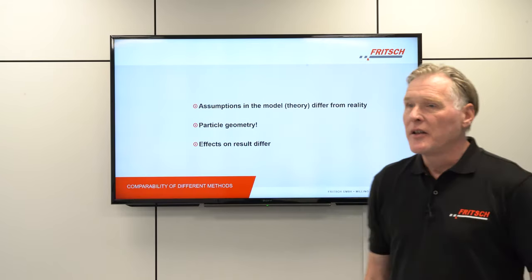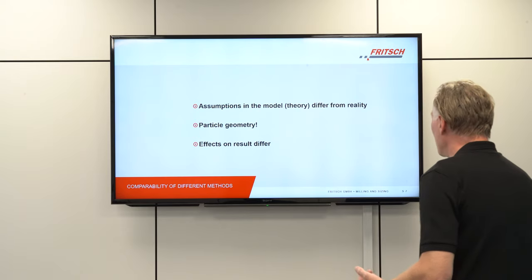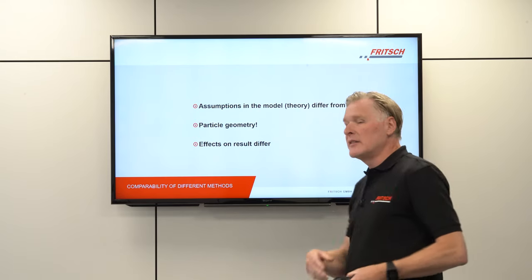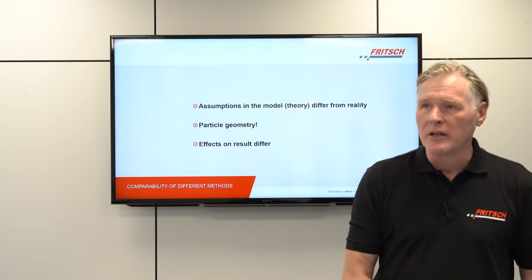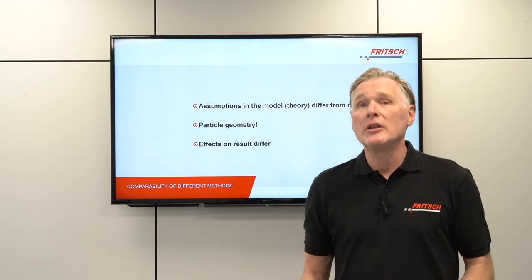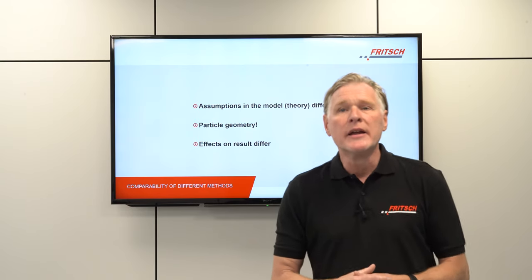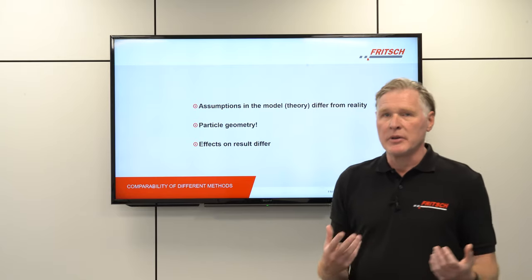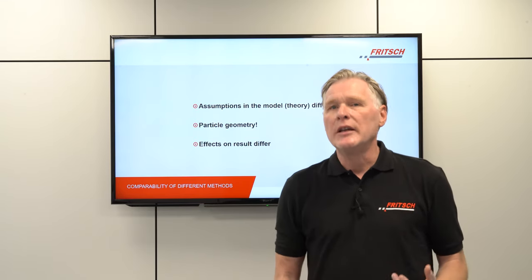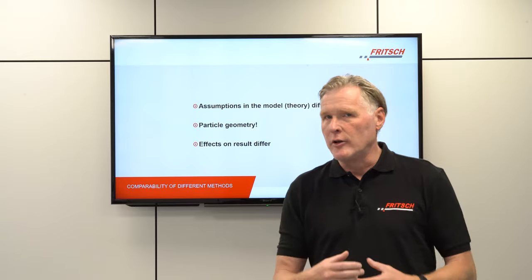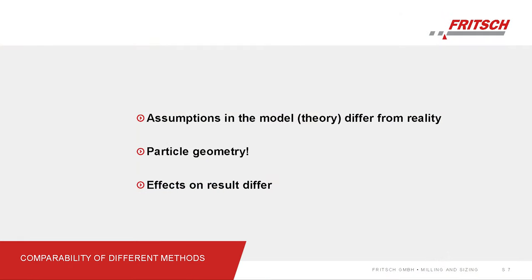The simple reason for this is that all those theories use models and assumptions that typically do not fit reality, so you have some deviations between the model and the real measurement situation. One important factor here is particle shape. Whether you have a spherical particle or a totally irregular shaped particle will strongly affect sedimentation, the scattering of light, or any other physical property you may observe.